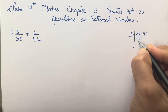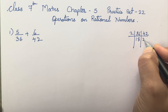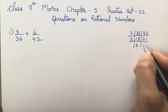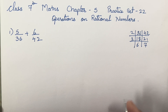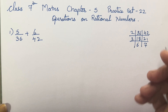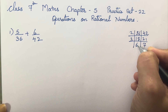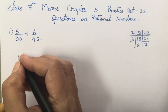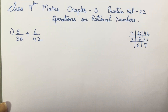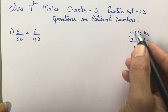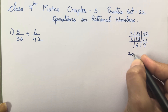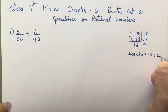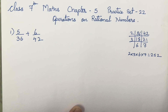So 2 eighteens are 36 and 2 twenty-ones are 42. Three 6s are 18, three 7s are 21. So we have to multiply 42 with 6 and 36 with 7. The common factors are 2, 3, 6, and 7, so 2 × 3 × 6 × 7 will give you 252. We have got the LCM.